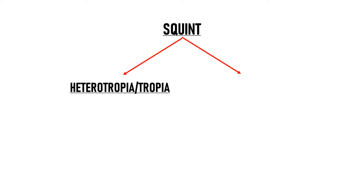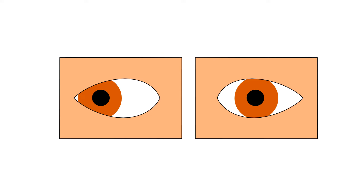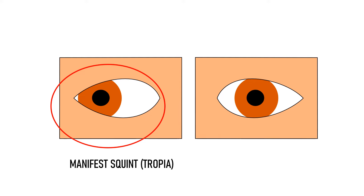Squint can be classified into two types: heterotropia, or simply tropia, and heterophoria, or simply phoria. Heterotropia refers to a manifest squint — something that is clearly visible and obvious to the eye. For example, a patient walks into your OPD and you see that his right eye is deviated outwards. This is a squint that is clearly visible; it is not hidden. This is what we call a manifest squint or a tropia.